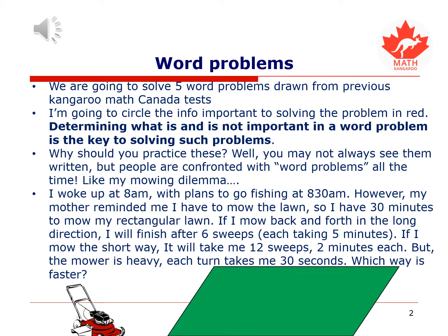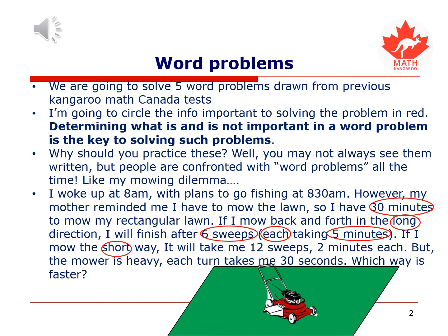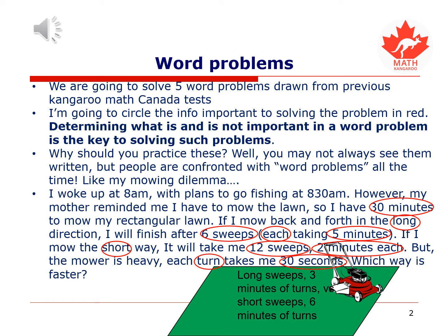I woke up at 8 a.m. with plans to go fishing at 8:30. However, my mother reminded me I have to mow the lawn. So I have 30 minutes to mow my rectangular lawn. If I mow back and forth in the long direction, I will finish after 6 sweeps, each taking 5 minutes. If I mow in the short way, it will take 12 sweeps, 2 minutes each, 24 minutes. But the mower is heavy, I'm not that strong. It takes me 30 seconds to turn the mower each time. Which way is faster?